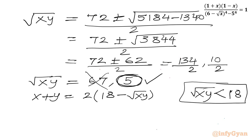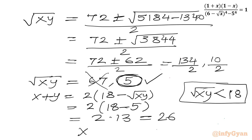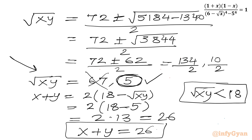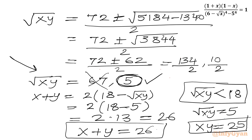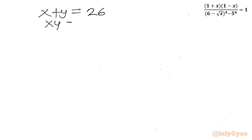With √(xy) = 5, we calculate x + y = 2(18 - 5) = 2 × 13 = 26. And from √(xy) = 5, we get xy = 25. So our system is: x + y = 26 and xy = 25. Remember, x = 1 remains a rejected value.